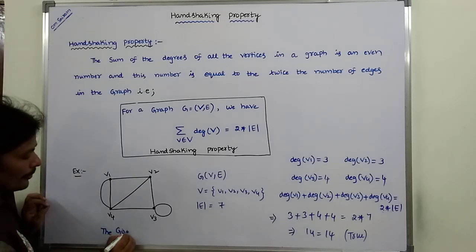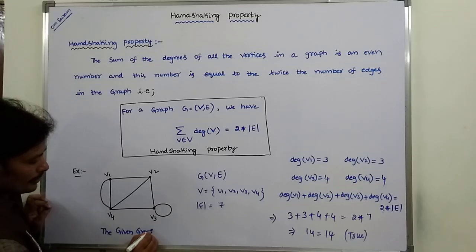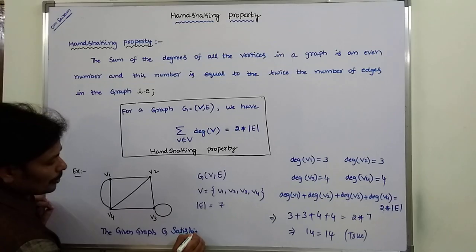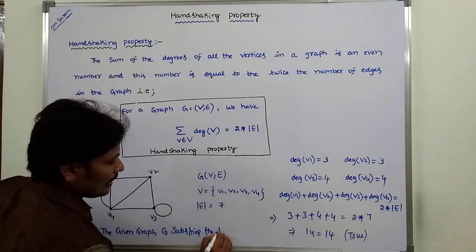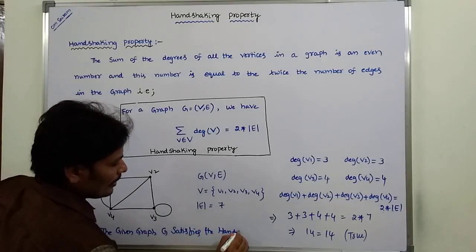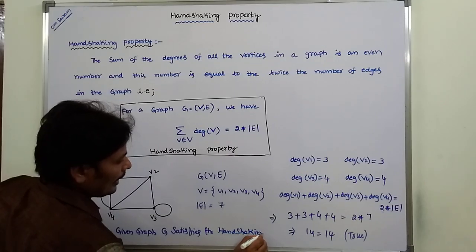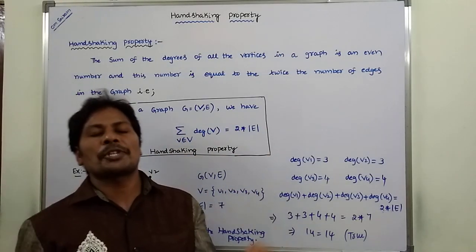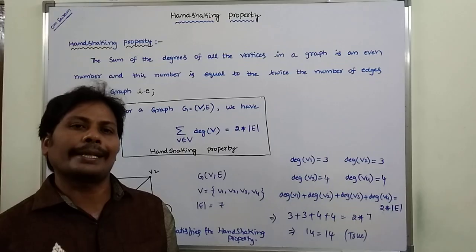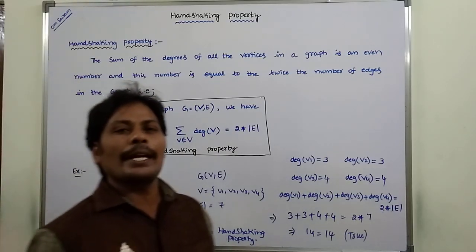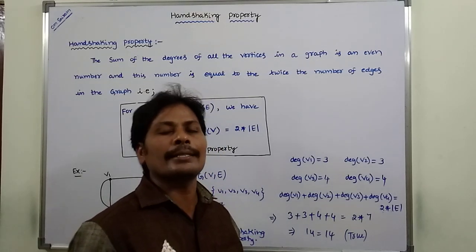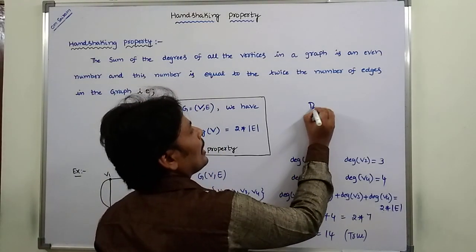The given graph G satisfies the handshaking property. This is the description about the handshaking property. Thank you for watching this video. If you like this video, please share it with your friends and classmates, and please subscribe to the channel.